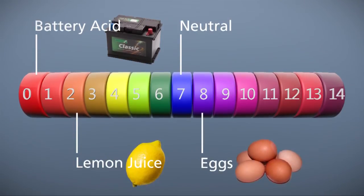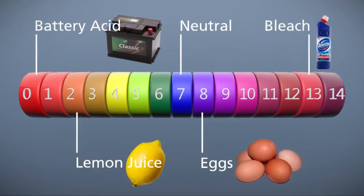Eggs have a pH of 8, making them slightly alkaline, and household bleach tends to be about a pH of 13.